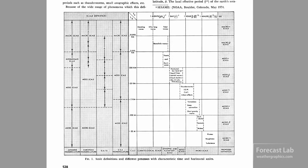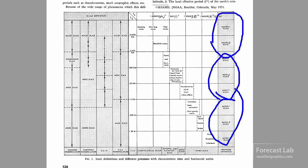Fast forward to 1975. Scientists had begun working with these definitions and trying to figure out how to best use them. And we ended up with this nomenclature: microscale, mesoscale, and macro, which is basically synoptic scale. The division that was set at about 2,000 kilometers between synoptic and mesoscale, and two kilometers between meso and micro.